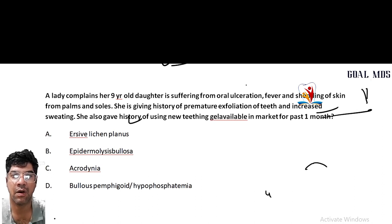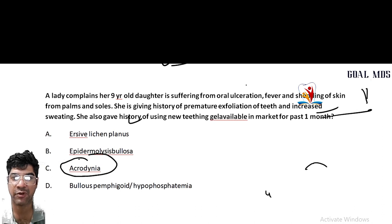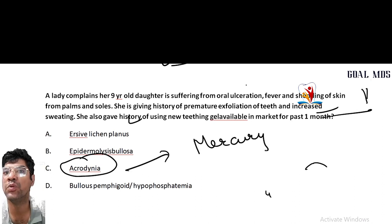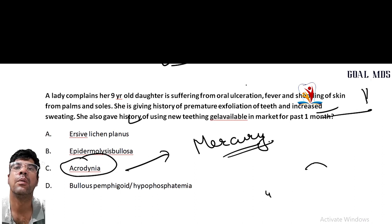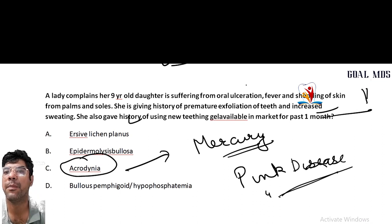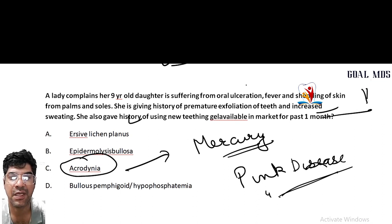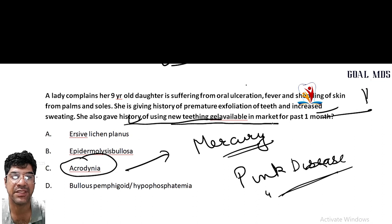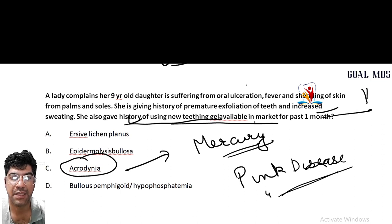A lady complains that her nine-year-old daughter is suffering from oral ulceration, fever, shedding of skin from palms and soles, premature exfoliation of teeth, and increased sweating. All these features are of acrodynia. Acrodynia is due to chronic mercury poisoning and is also known as pink disease. It is characterized by fever, skin shedding from palms and soles, exfoliation of teeth, and increased sweating. A history of the patient using a new teething gel containing mercury or mercury-related compounds can develop acrodynia.